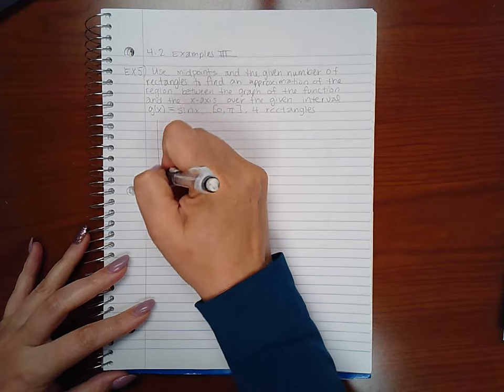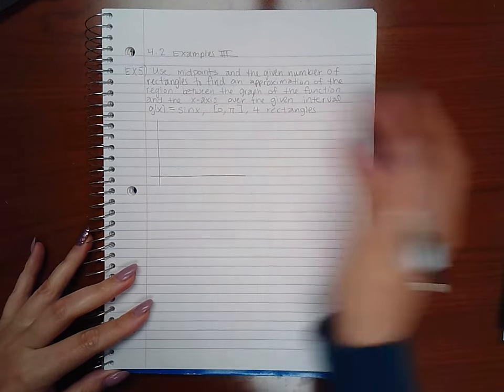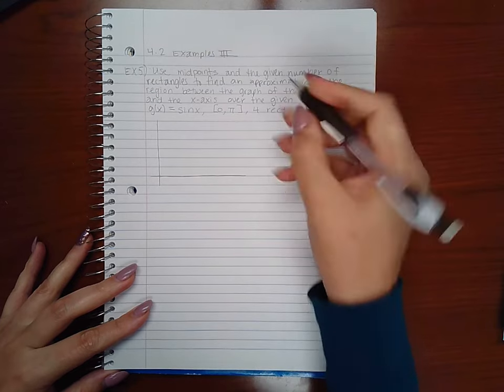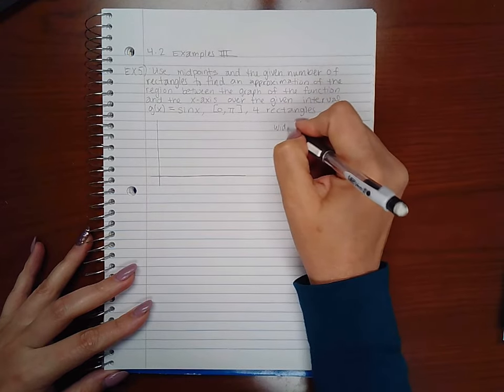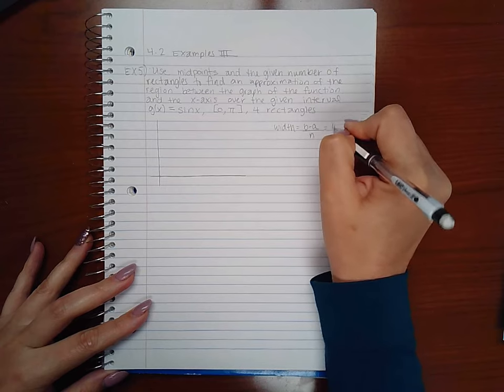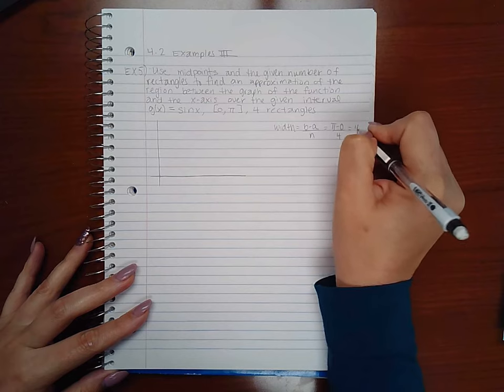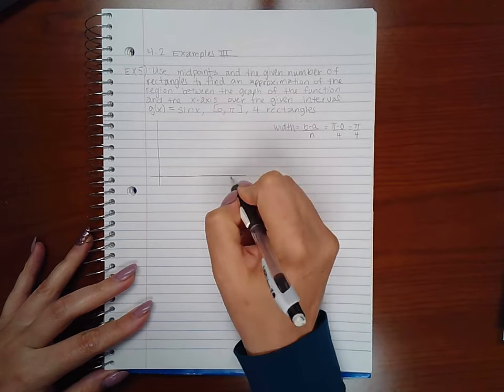So I am going to draw this function here from 0 to π and if I'm going to cut it up into rectangles let me see what the width would have to be. So the width would have to be b minus a over n which means π minus 0 over 4, which means the rectangles would have to be π/4 units.